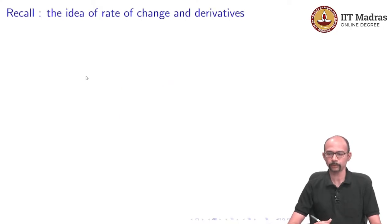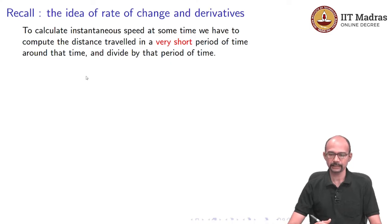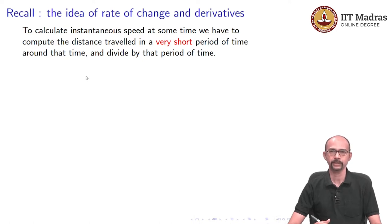Let us recall first the idea of the rate of change and derivatives from one variable calculus. To calculate instantaneous speed at some time, we have to compute the distance travelled in a very short period of time and divide by that time period, and that should be a close approximation of the instantaneous speed. This was something we studied when we introduced the notion of derivatives in one variable calculus.